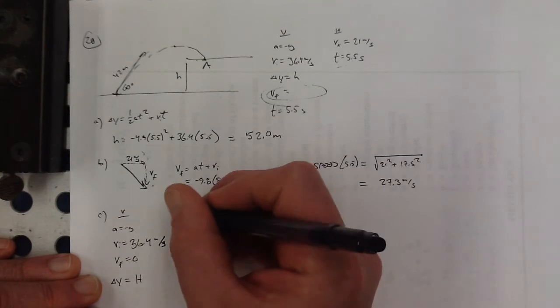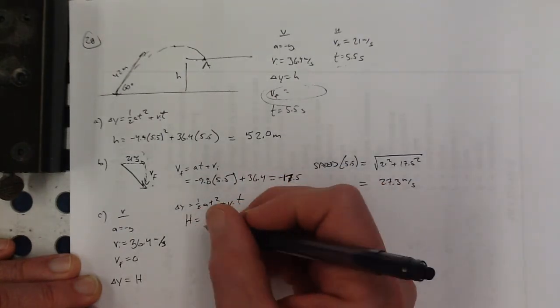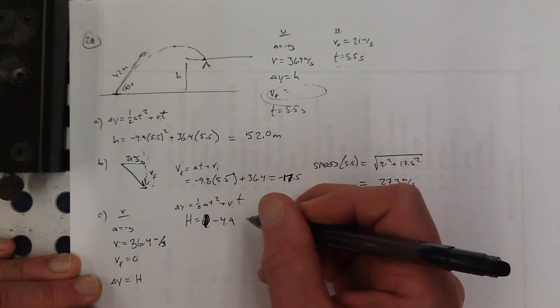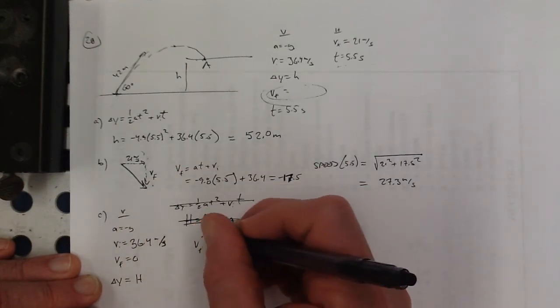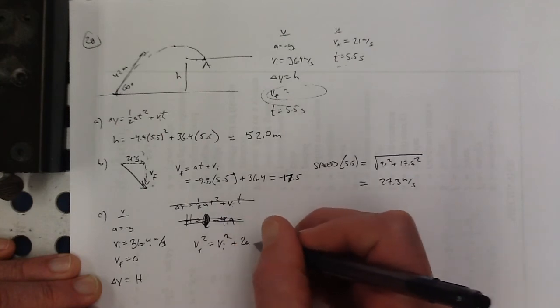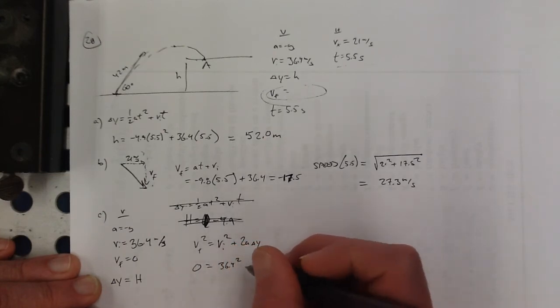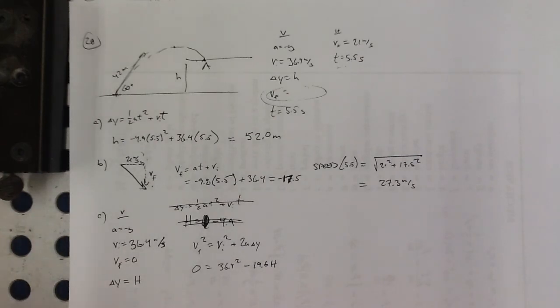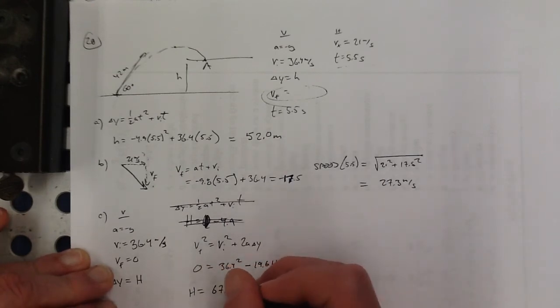All right, so my h, my delta y. You being good about that? You writing down your equations before you use them? You should. We need the vf squared is equal to vi squared plus 2a delta y. That's what we need. So that's zero. This is whatever that is minus 19.6 times h. Divided by 19.6 is that maximum height h is about 67.6 meters. All right, that's number 28.